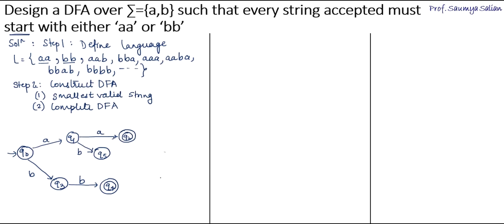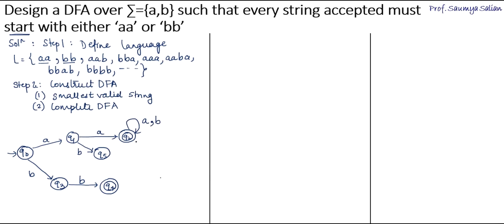Coming to state q2: to reach q2 we have input AA, meaning we are always starting with the substring AA. So even if at state q2 we get another A, it is still valid because we are always starting with AA — so we add a self-loop on input A. What about input B? It is still valid because we already satisfy the condition of starting with AA, so we also add a self-loop on input B. q2 has responded to both inputs A and B.